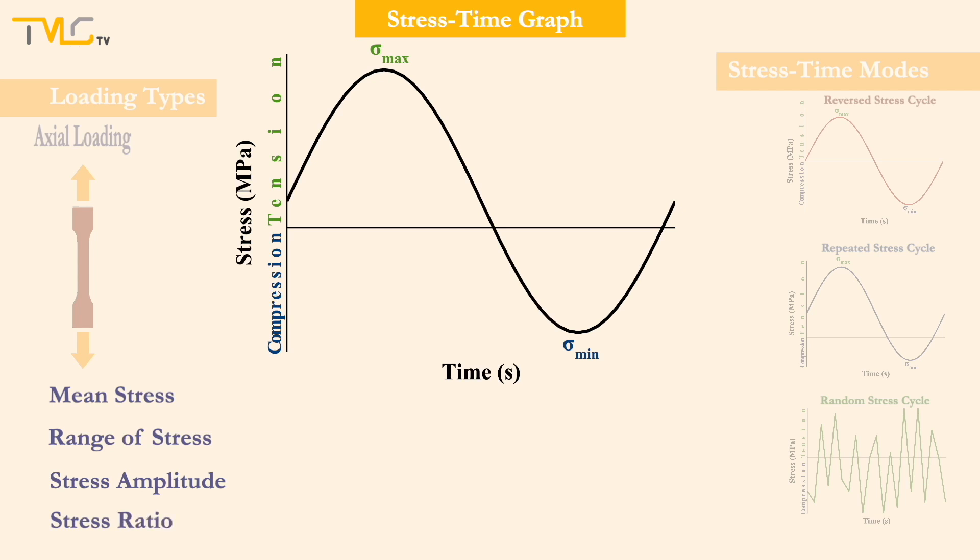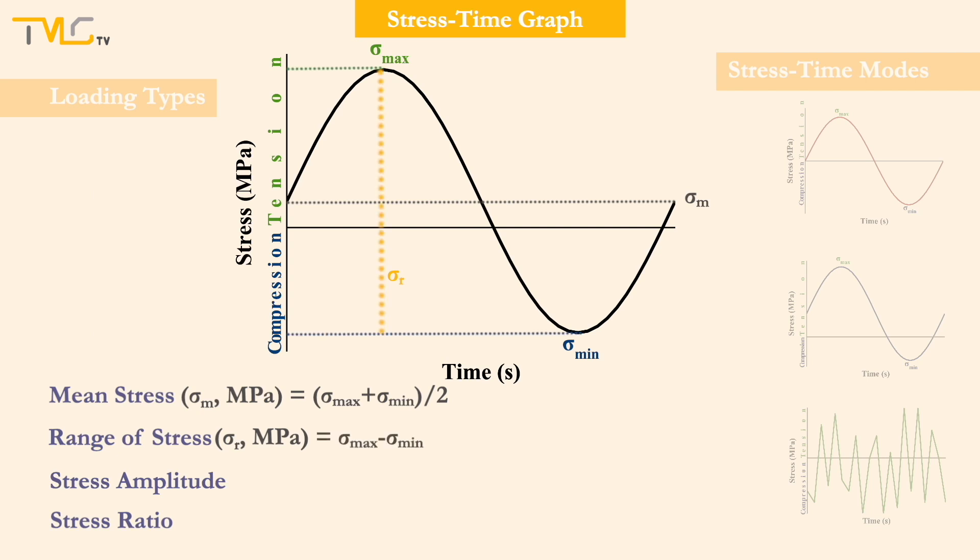Mean stress is denoted as sigma m, and is reported in MPa, and is equal to the average of maximum and minimum stresses in cycle. The range of stress is denoted as sigma r, and is reported in MPa, and simply stands for the difference between sigma max and sigma min. So, stress amplitude is denoted as sigma a, and reported in MPa, and defines the amplitude of the applied maximum and minimum stress with respect to the mean stress, and is equal to the half of the range of stress value.